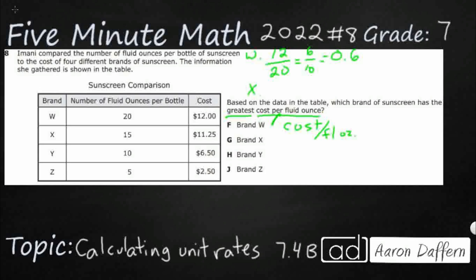X is cost 11.25 per fluid ounce, 15. We are going to need to just divide that. So let's do that up here. Let's do 15 into 11.25. 15 times 6 is 90, times 7 is 105. So I think it is going to be times 7.